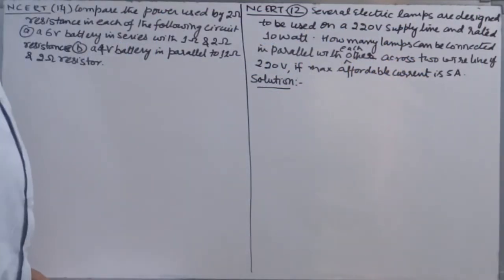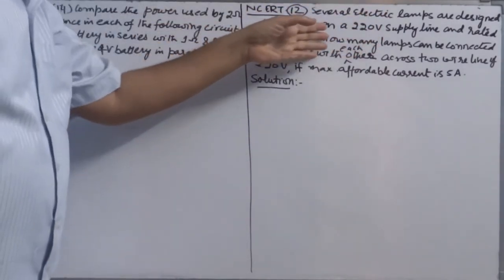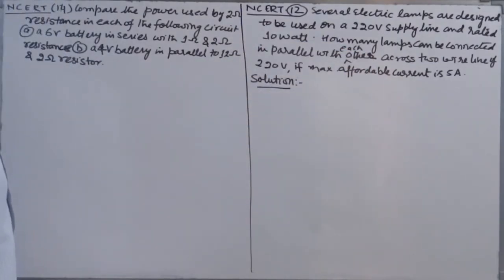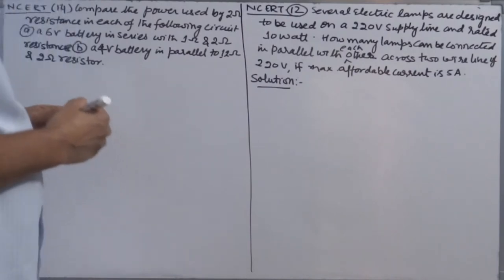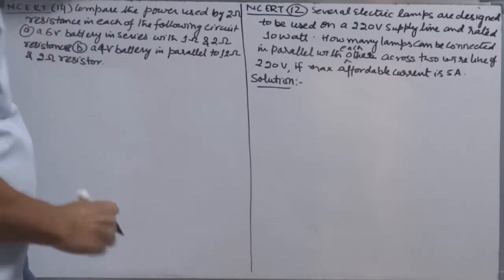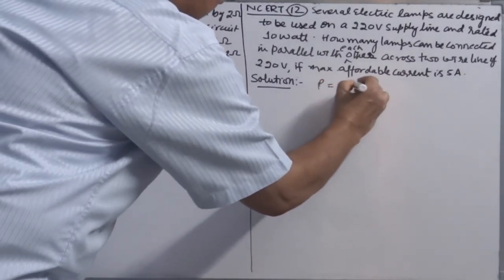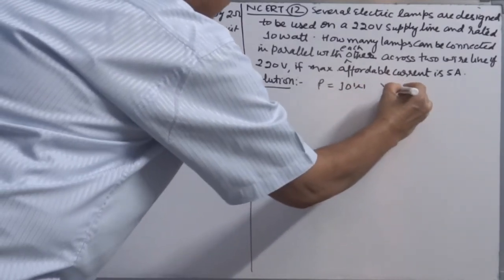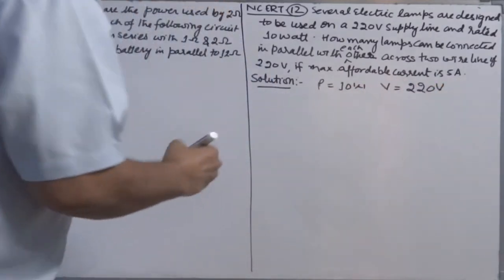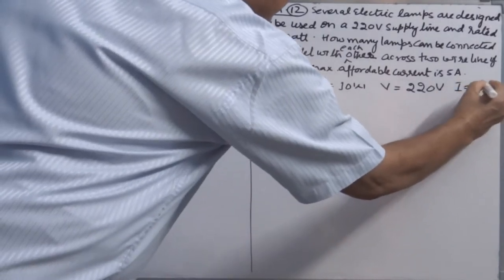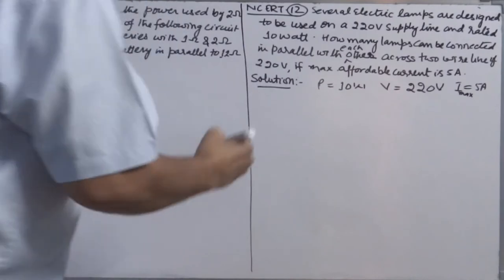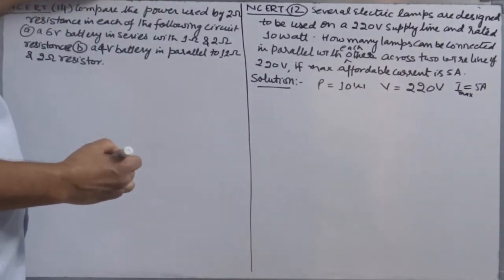Question number 12: Several electric lamps are designed to be used on a 220 volt supply line, rated 10 watt. How many lamps can be connected in parallel with each other across a two-wire line of 220 volt if the maximum allowable current is 5 ampere? Given: power of one lamp is 10 watt, voltage of line is 220 volt, maximum current is 5 ampere.